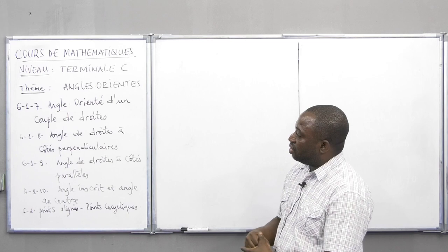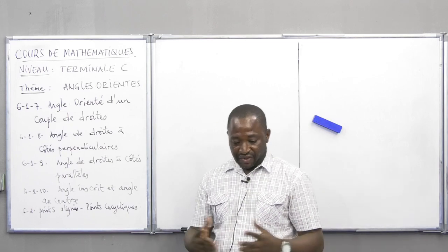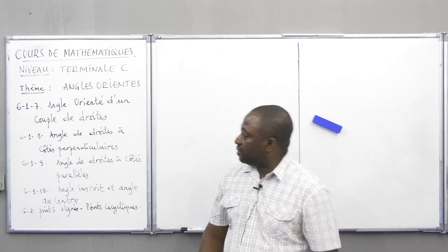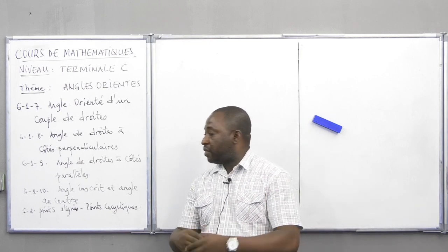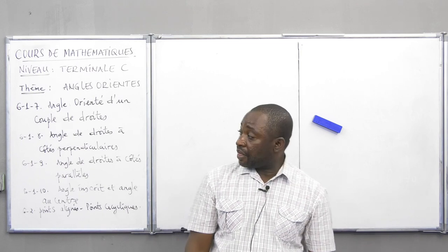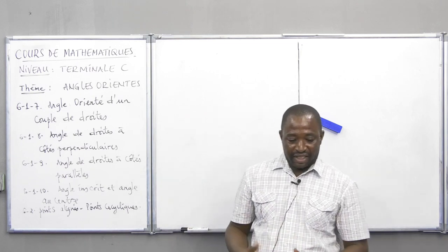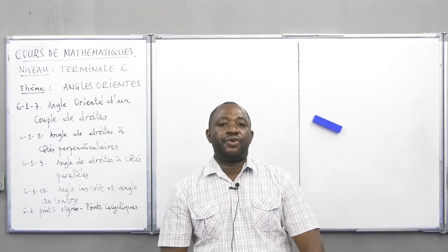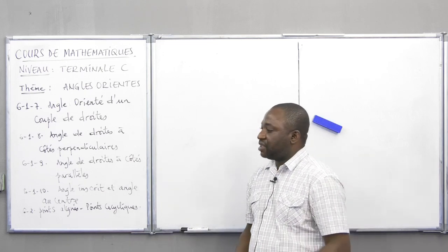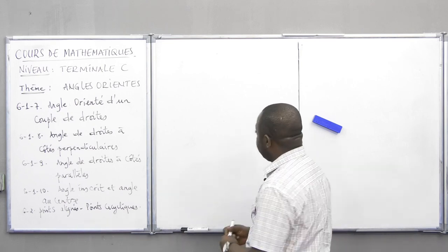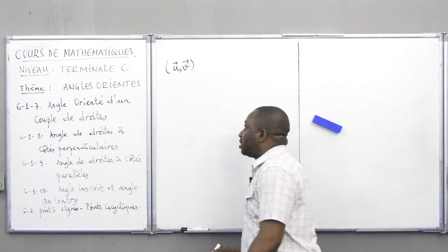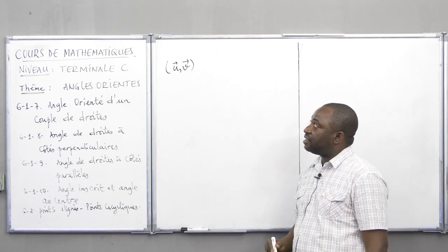Nous allons commencer par l'angle orienté d'un couple de droite. On va définir ce qu'est l'angle orienté du couple de droite et donner quelques propriétés fondamentales. Comme on l'a défini pour l'angle orienté du couple de vecteurs, lorsque nous prenons deux vecteurs U et V non nuls, l'angle orienté de vecteurs était noté (U, V), où U et V sont des vecteurs non nuls.